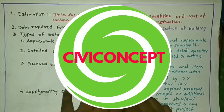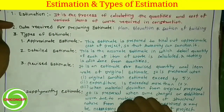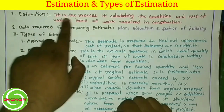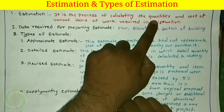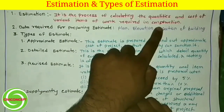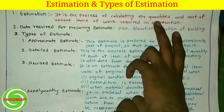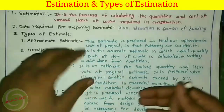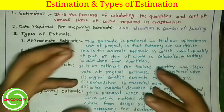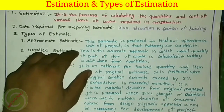Hello friends, welcome to my channel CiviConcept. Today I am going to teach you what is an estimate, data required for an estimate, and types of estimates. First of all, estimate is the process of calculating the quantities and cost of various items of work required in connection with a construction project. We have to calculate which quantities — obviously we are constructing a building, so we need to calculate the quantities of each item of work.